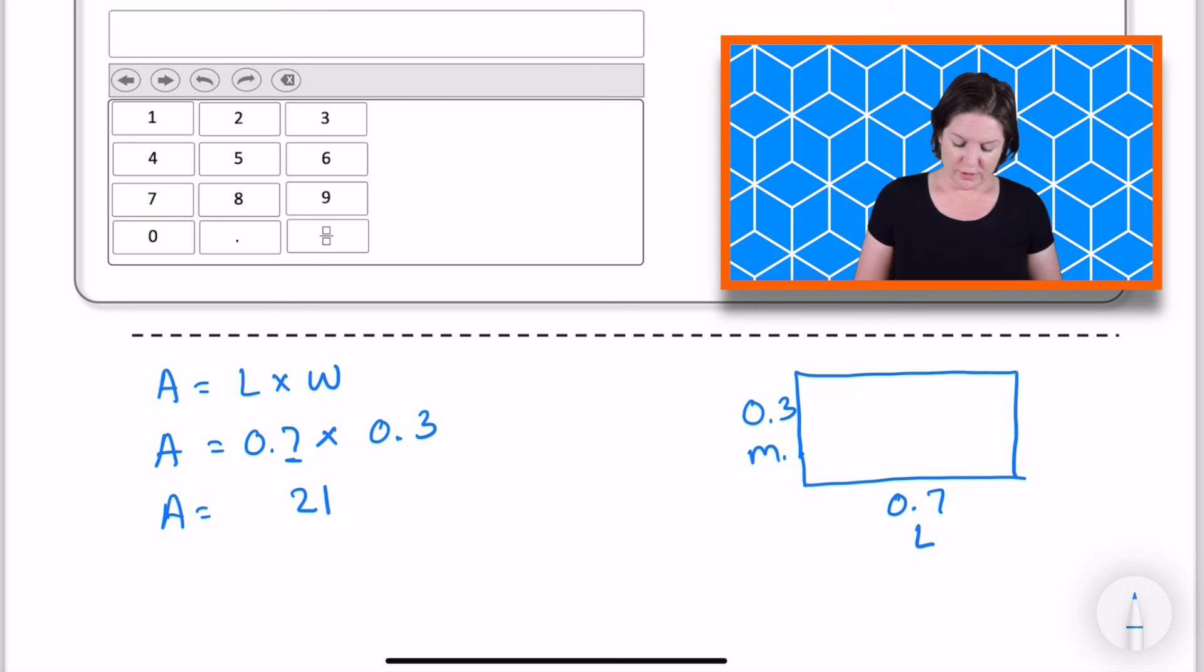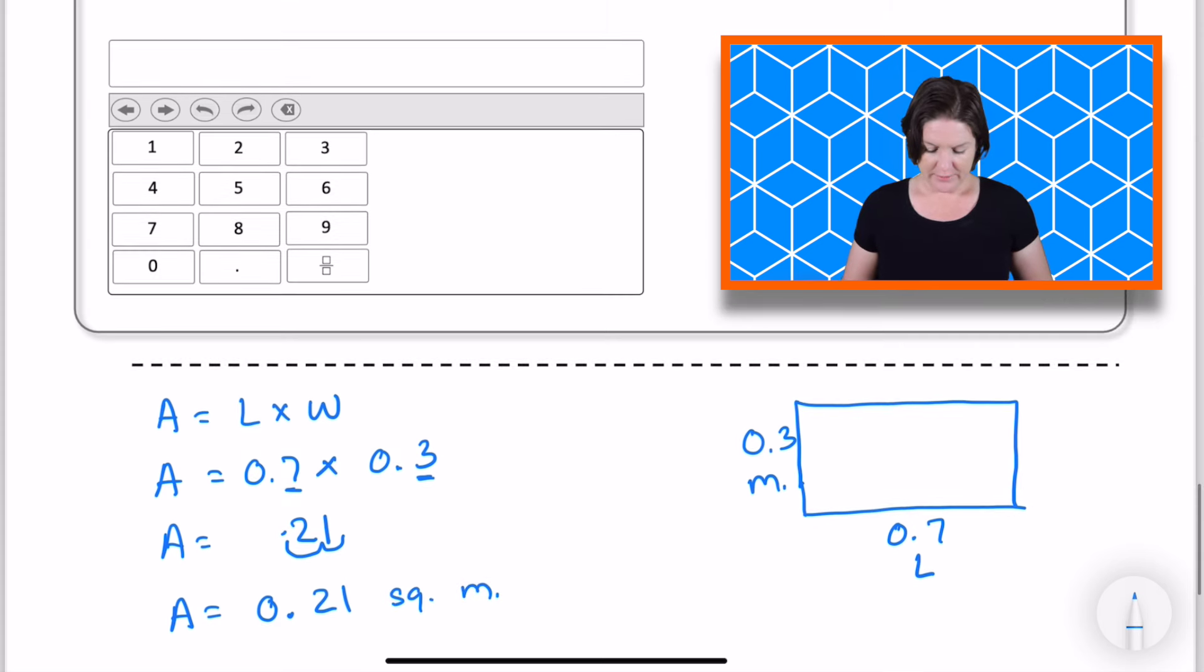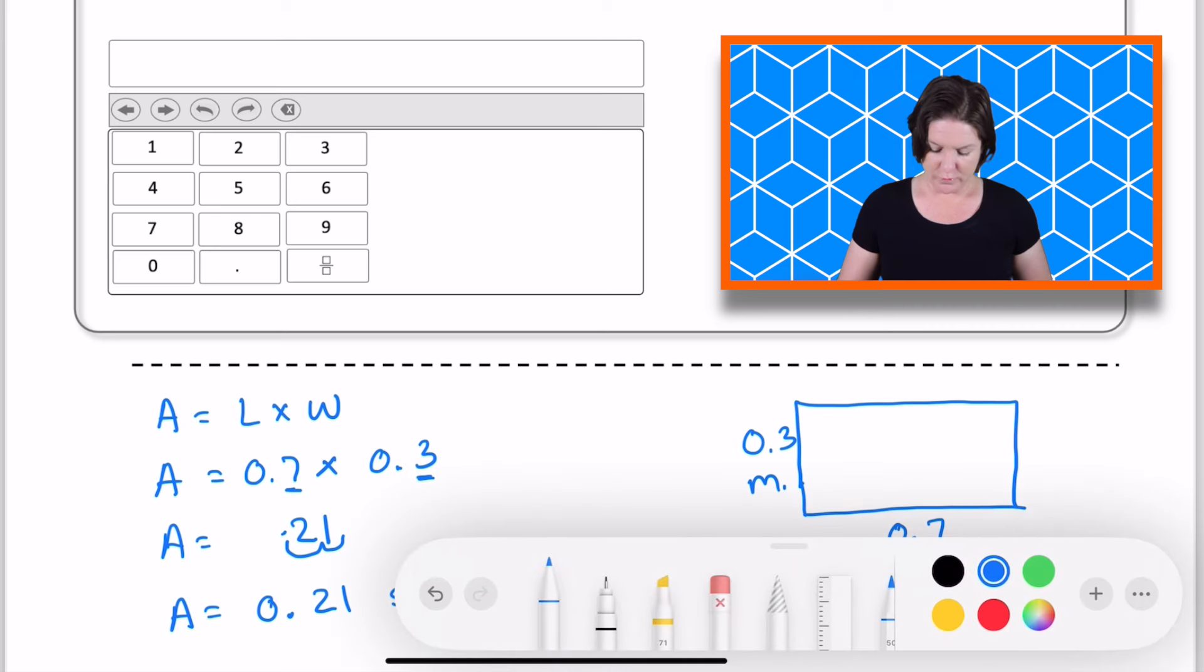So because we have two digits, one digit here and one digit here behind that decimal, that means we're going to make two hops and our decimal is going to go right there. So if we were to rewrite that, that would be 0.21. That's not how I like to read it. But it would be 21 hundredths square meter. Okay. 21 hundredths of a square meter.